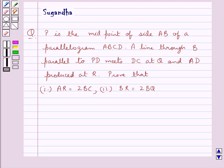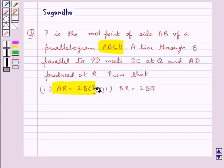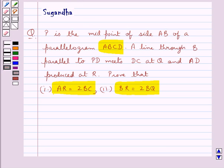Hello and welcome to the session. In this session we discuss the following question: P is the midpoint of side AB of the parallelogram ABCD. A line through B parallel to PD meets BC at Q and AD produced at R. Prove that AR is equal to 2 times BC and BR is equal to 2 times BQ.